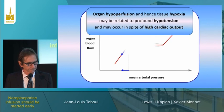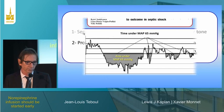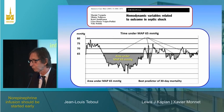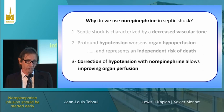Profound hypotension worsens organ perfusion and represents an independent risk of death, demonstrated in many studies. In one visually compelling study, the area under MAP 65 mmHg was the best predictor of mortality in septic shock patients. Fortunately, correction of hypotension with norepinephrine allows improvement in organ perfusion, as shown in multiple studies.